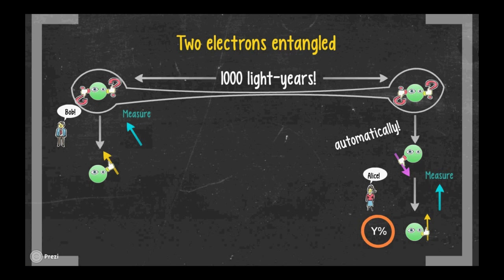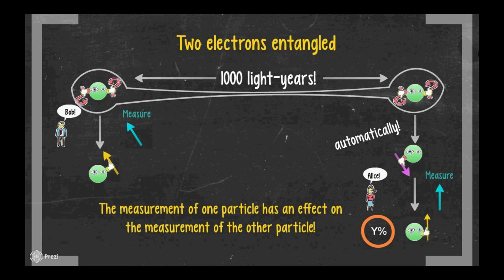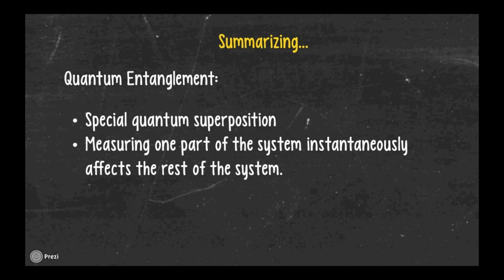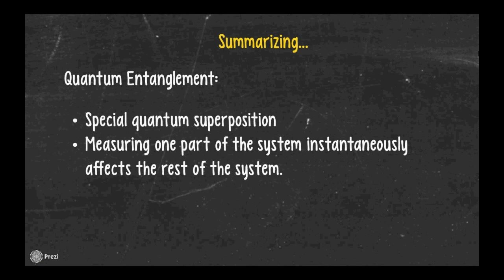This means that the measurement of one particle has an effect on the measurement of the other one, no matter how far apart both particles are. Amazing, right? So this is entanglement, a special case of quantum superposition in which the measurement of one part of the system instantaneously affects the rest of the system.